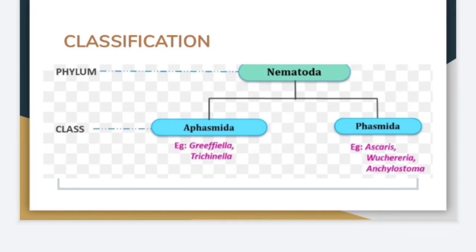The life cycle of Ascaris lumbricoides is completed in humans. The phylum Nematoda is divided into two classes: Aphasmidia and Phasmidia. Examples in class Aphasmidia include Graphella and Trichinella. Examples in class Phasmidia include Ascaris, Wuchereria, and Cytoma. These are the various examples of these classes.